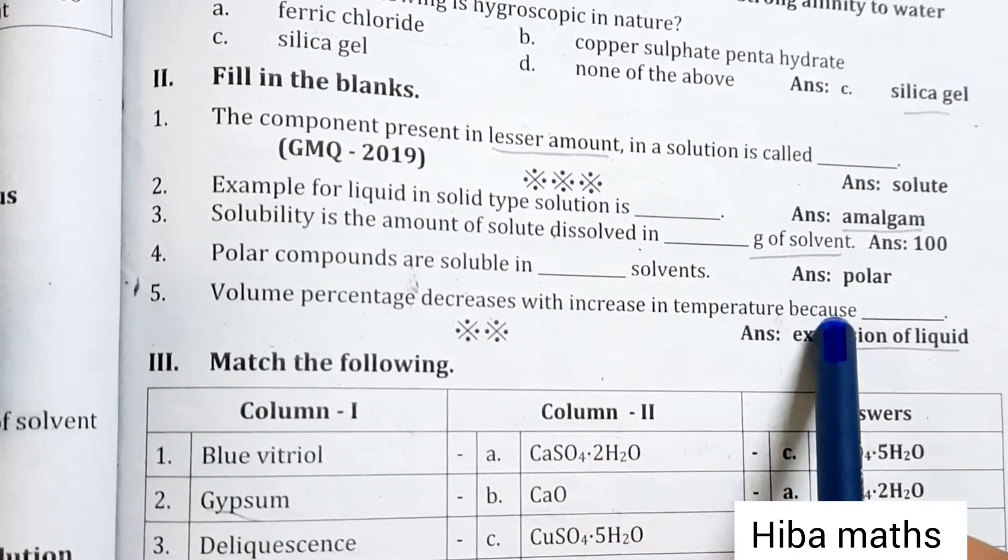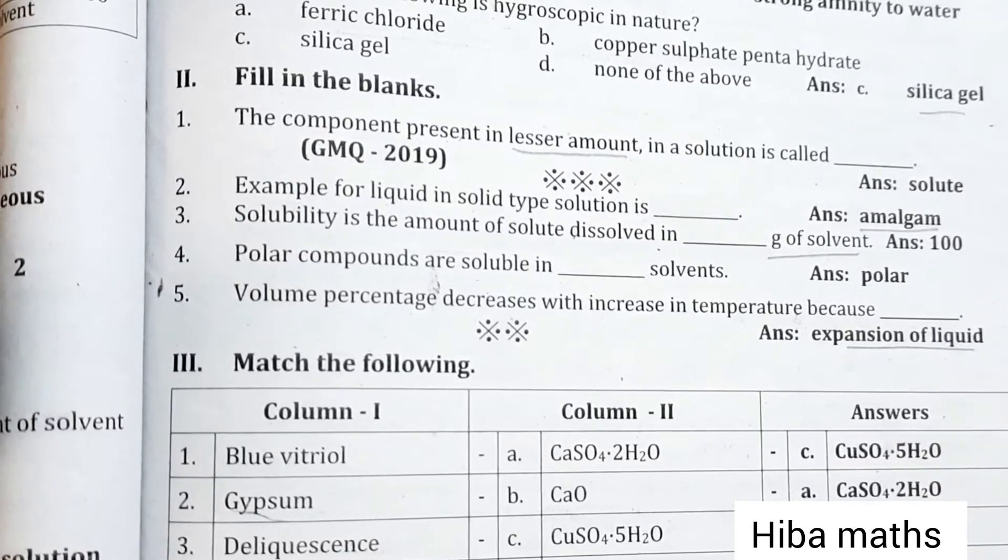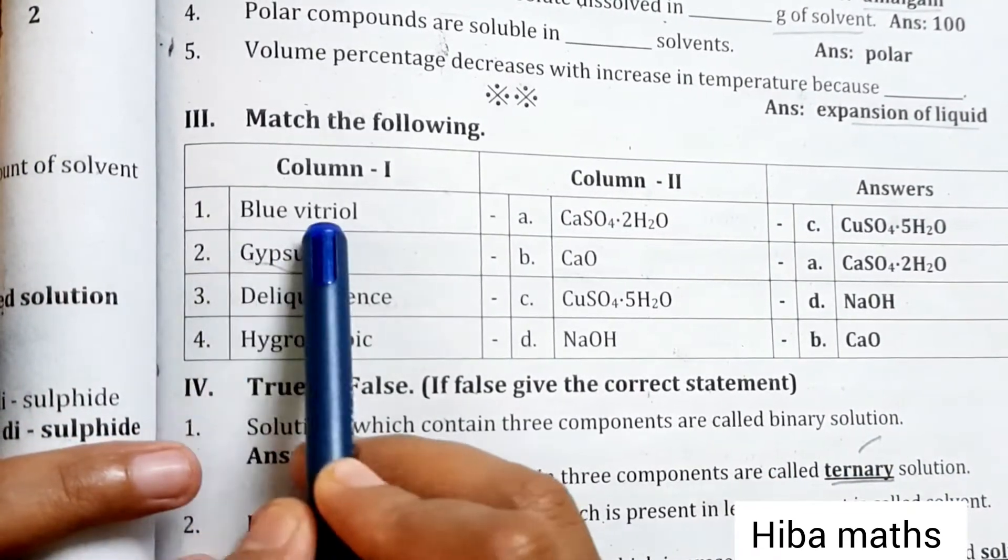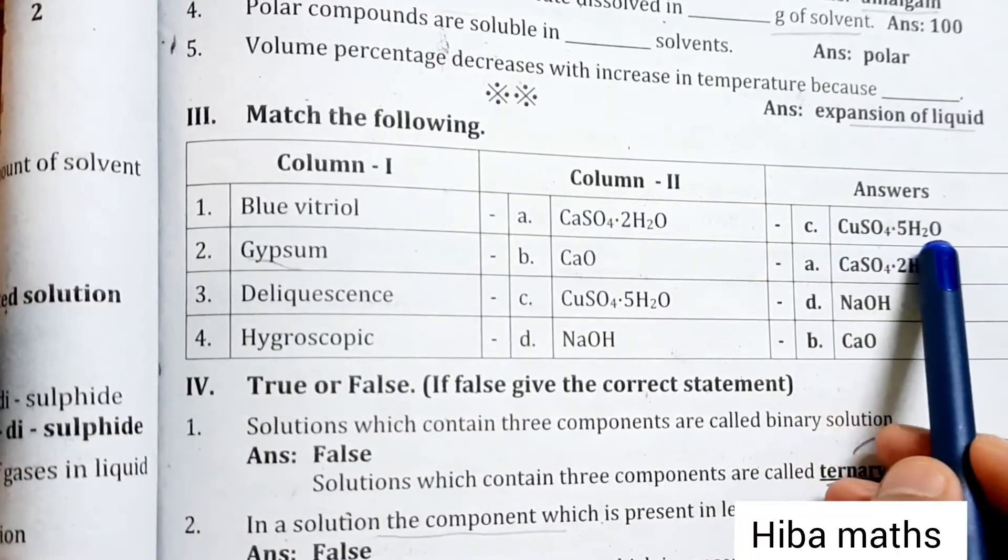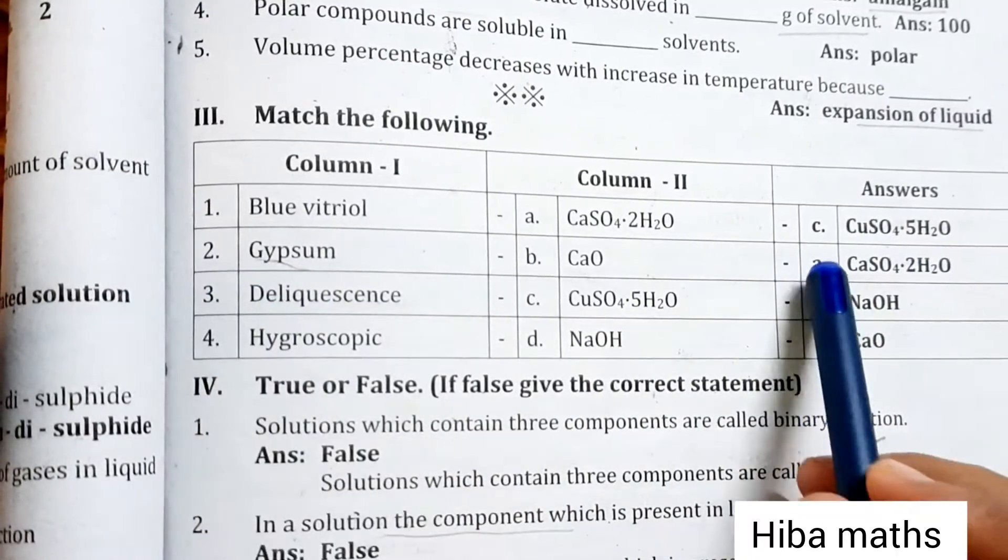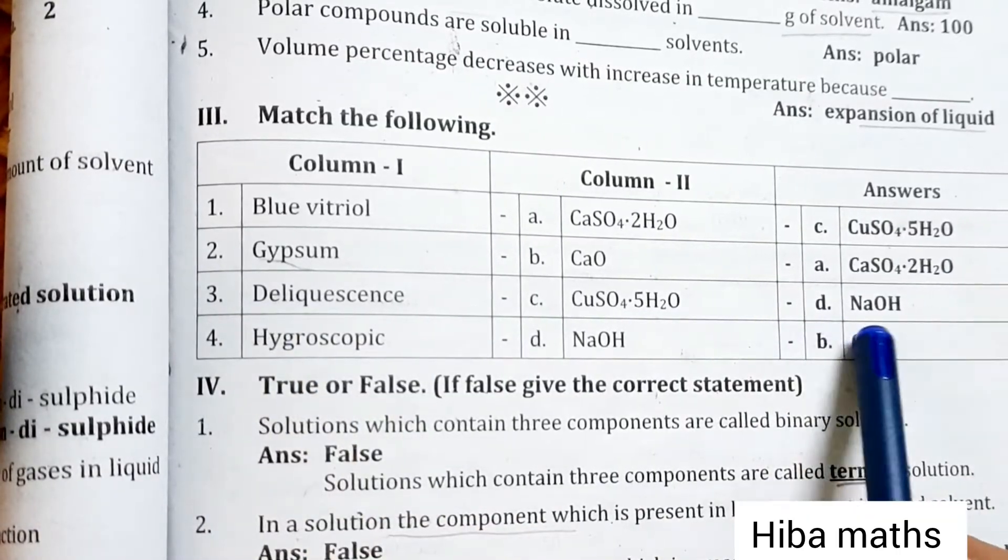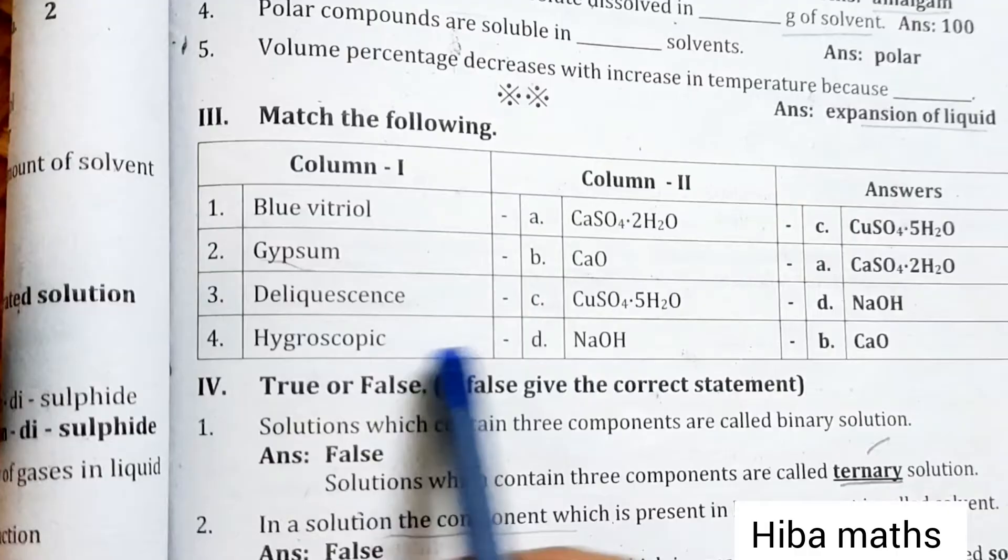Match the following: Blue vitriol - CuSO4·5H2O; Gypsum - CaSO4·2H2O; Deliquescence - NaOH; Hygroscopic - CaO.